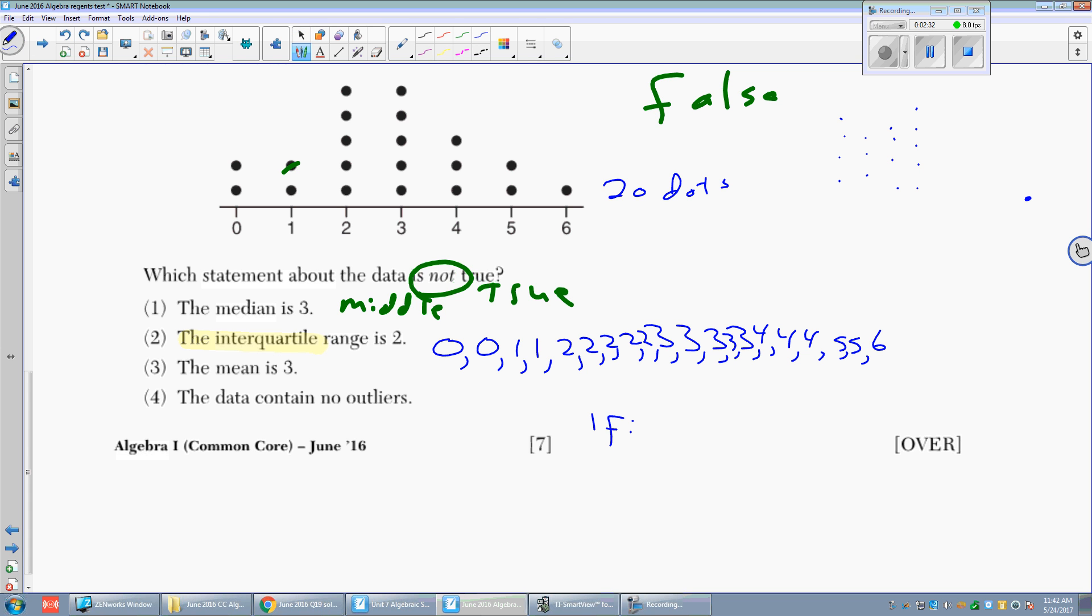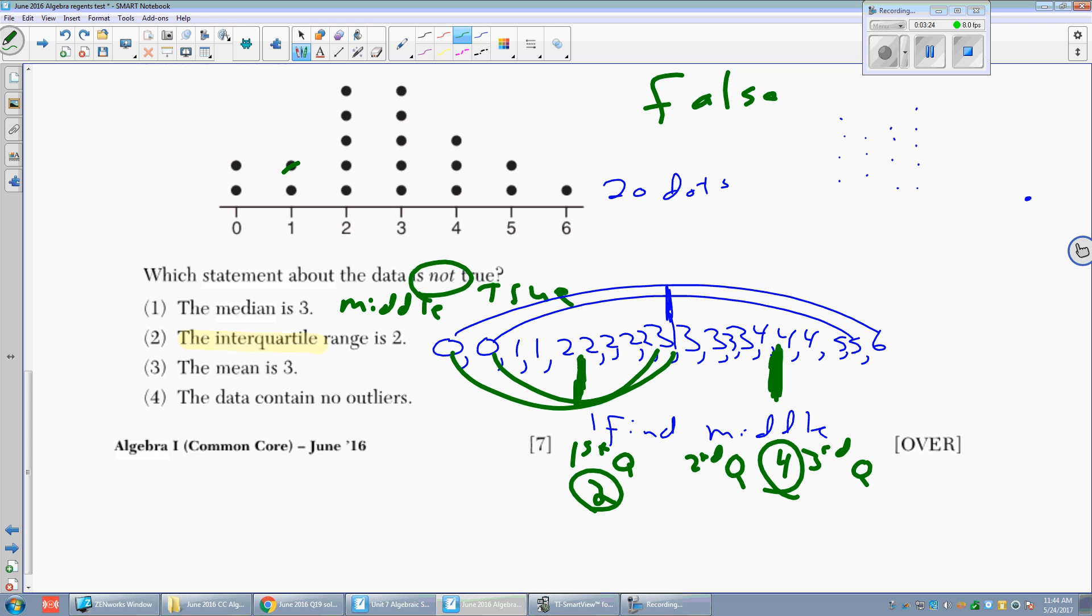You find the middle, and the middle is right there. The way that I find the middle is I just pair up the first and the last, the first and the last and so on. So the middle is right between three and three. Now I find the middle of the bottom half, and the middle of the bottom half is right there. You pair them up. So it's two. Now I find the middle of the top half. The middle of the top half is right there, right between four and four. So this is the first quarter. Three is the second quarter. And four is the third quarter. And it says the interquartile range, four minus two is two. That's true.